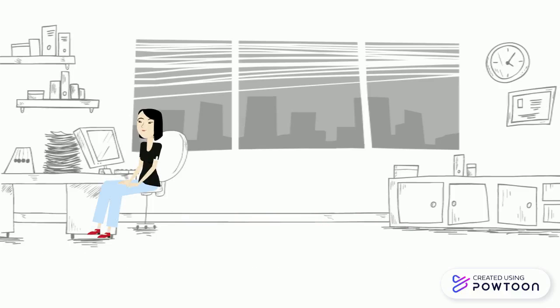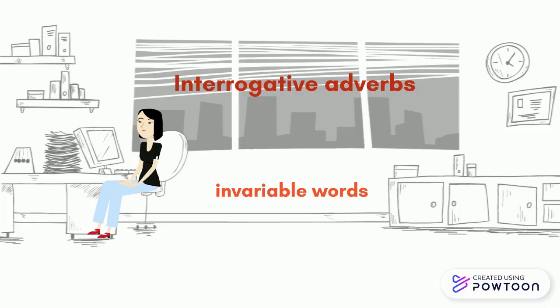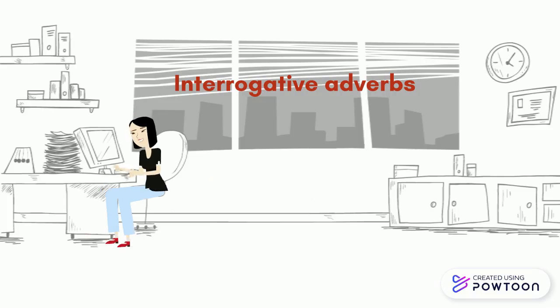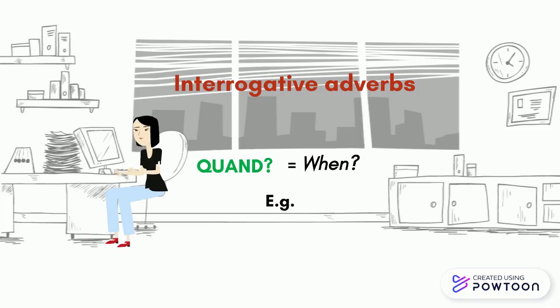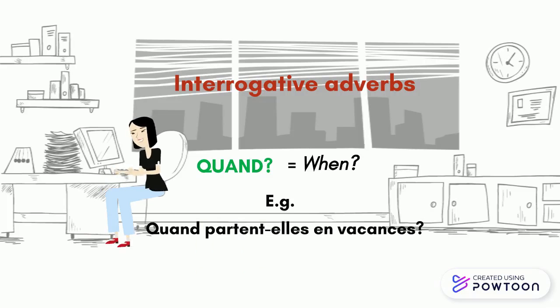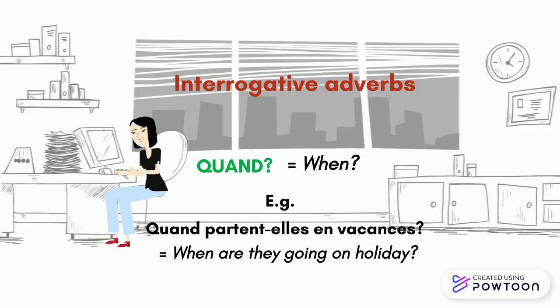The first type of interrogative words is interrogative adverbs. As a reminder, adverbs are invariable words — they do not change. Here are the main ones. Quand? — When? For example, Quand partent-elles en vacances? — When are they going on holiday?